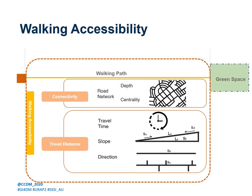On the path, there are two main criteria for evaluating walking accessibility. The first one is connectivity. If the green space is located in a road structure with better connectivity, then the opportunity of accessing the green space would be higher from any point within the research area. We adopted two spatial parameters — depth and centrality of the road structure — to evaluate connectivity. The second one is travel distance. If the travel distance is longer, then the accessibility of the green space is weaker. The surrounding environment impacts travel distance via changes in walking speed, so we adopted travel time, slope, and direction changes to evaluate travel distance.